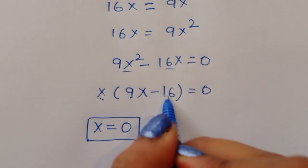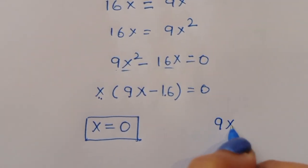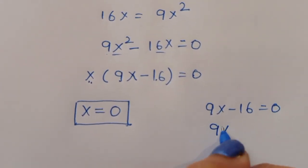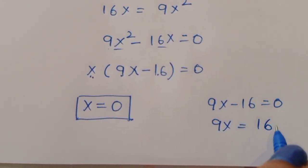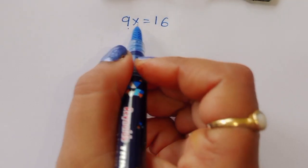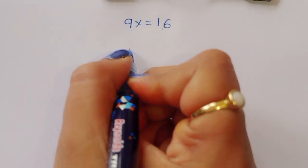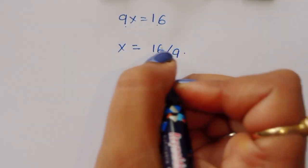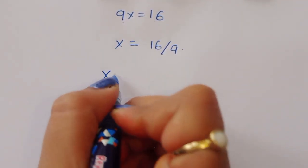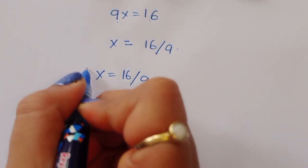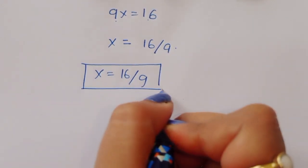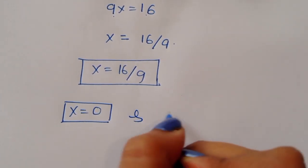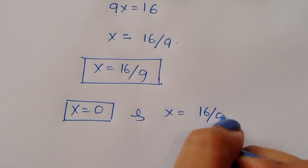The second factor gives 9x minus 16 equals 0, so 9x equals 16, therefore x equals 16 by 9. So we have two solutions: x equals 0 and x equals 16 by 9.